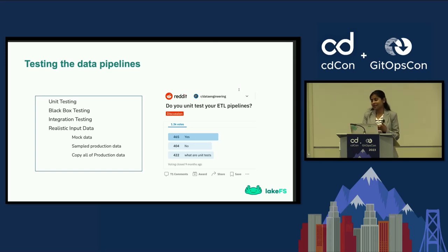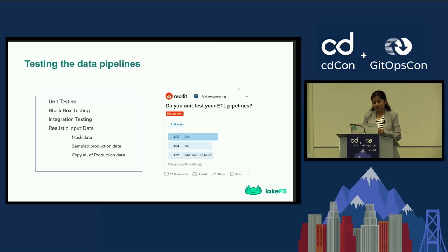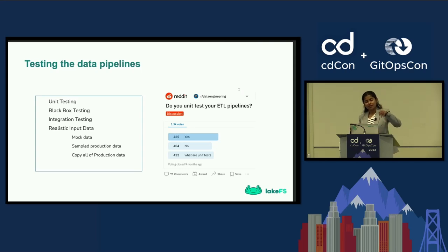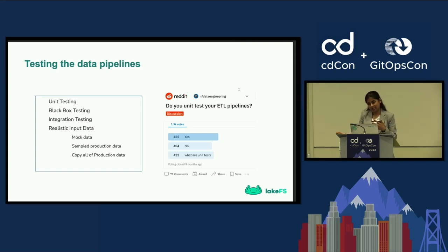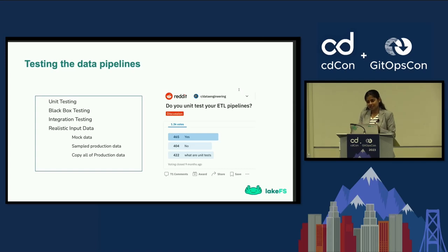I have been guilty of working directly with production data and not necessarily testing pipelines before pushing data into production. We have standard testing practices borrowed from the software engineering world: unit testing, black box testing, and integration testing — which is most important here. When you think about data pipelines, you have multiple data sources your pipeline is reading from, complex multi-step transformations, and multiple consumers sometimes reading concurrently from your transformed data. Because of this complex ETL setup, we need integration testing or end-to-end testing of our pipelines.